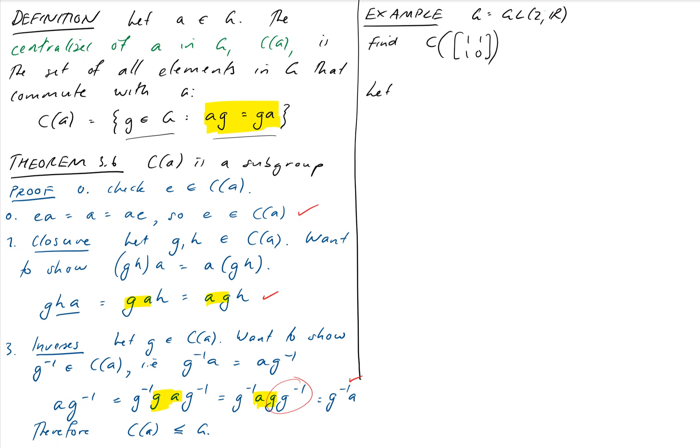Let's just set up a general matrix X equal A, B, C, D, where we know, because it's a member of GL2R, AD minus BC, its determinant is non-zero.